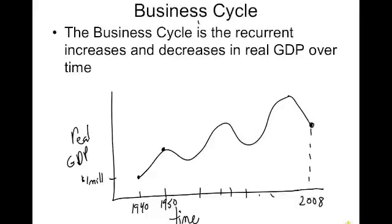The business cycle is an idea that refers to the ups and downs of an economy. On this graph, the y-axis measures real GDP and the x-axis measures time in years. As you go higher up the y-axis, it indicates a higher level of real GDP.